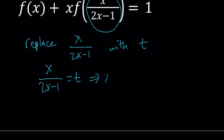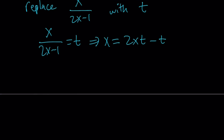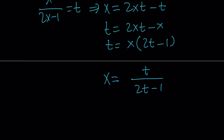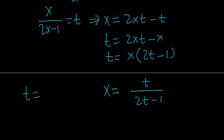From here, if you cross multiply, you get x equals 2xt minus t. I want to solve for x, so let's put all the terms that have x on the same side and put the t on the left-hand side. We end up with t equals 2xt minus x, and then I can factor out x to get 2t minus 1. Dividing both sides by 2t minus 1 gives x equals t over 2t minus 1. Notice they have the same structure — this is a function whose inverse equals itself.